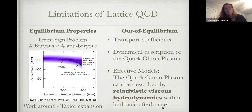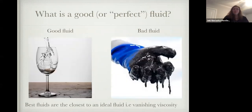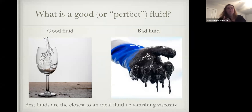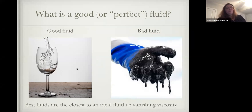What does it mean to have a nearly perfect fluid? On the left you see water — a good fluid that flows very nicely into a cup. On the right, tar — a bad fluid that gets stuck, doesn't flow, looks very thick. When I talk about a nearly perfect fluid, I'm thinking of the picture on the left: flowing very nicely, not much viscosity.